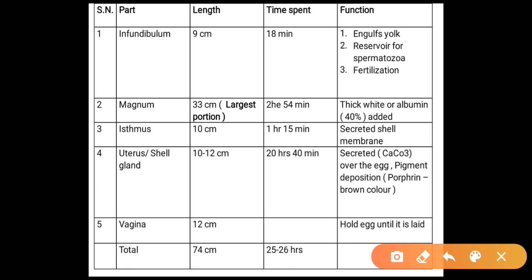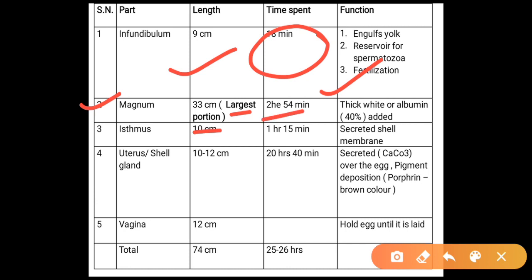The infundibulum is about 9 cm long; the egg spends about 18 minutes here. Its functions are: it engulfs the yolk, serves as a reservoir for spermatozoa, and is the site of fertilization. The magnum is about 33 cm — the largest portion of the oviduct. The egg spends about 2 hours 54 minutes here. Its function is thick albumin formation; about 40% of albumin is added in this part.